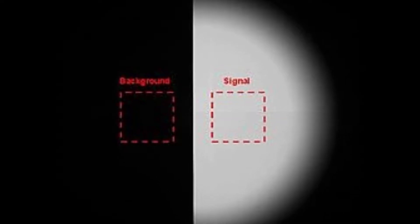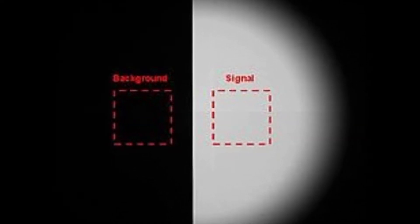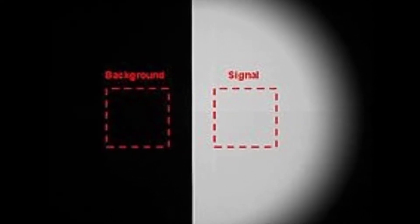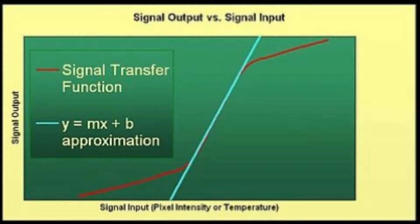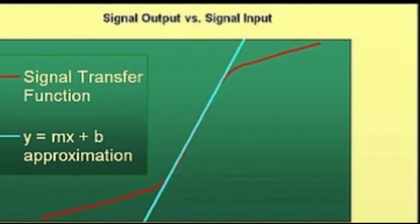The signal transfer function is a measure of the signal output versus the signal input of a system, such as an infrared system or sensor. There are many general applications of the signal transfer function, specifically in the field of image analysis.